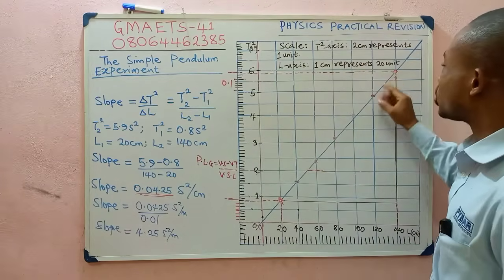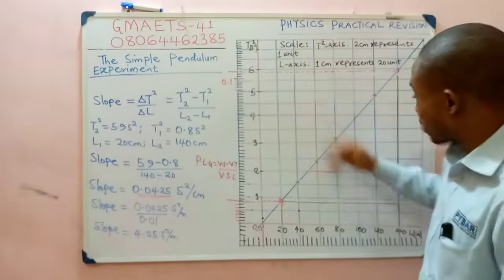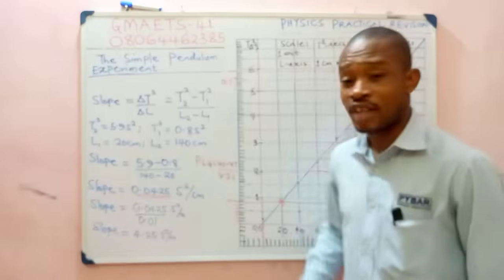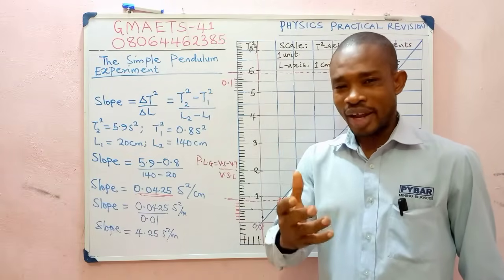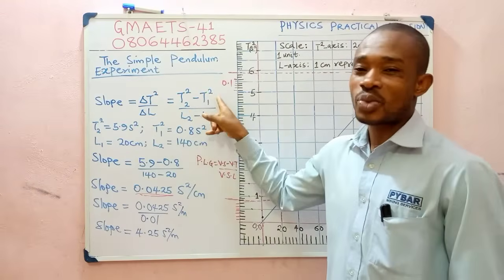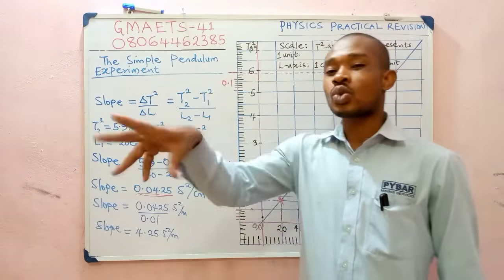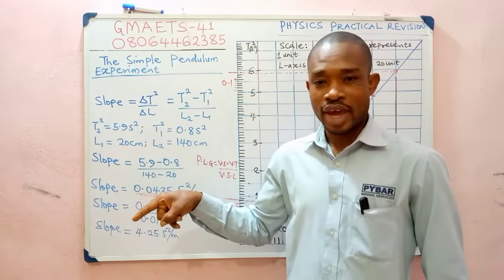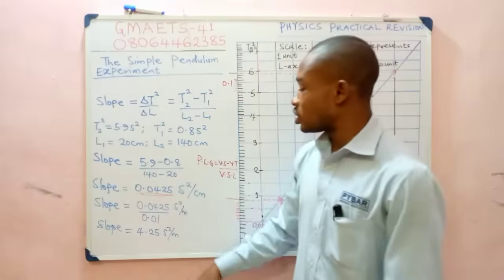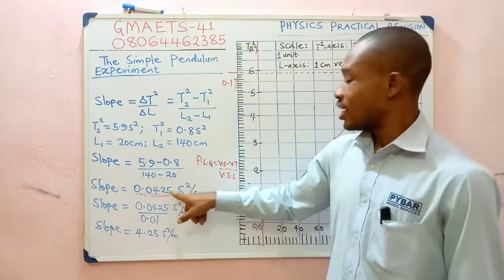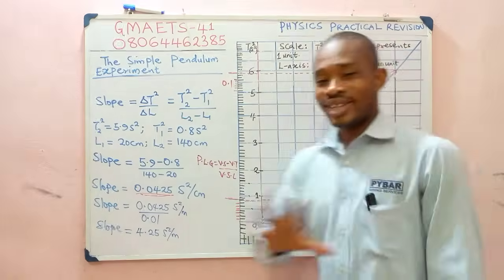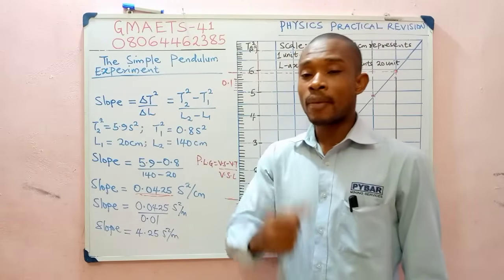When calculating slope, do not use generic y2 minus y1 over x2 minus x1 — the question didn't ask you to plot y against x. Use the actual quantities: (t2² − t1²) / (L2 − L1) = (5.9 − 0.8) / (140 − 20). Punching that into your calculator gives 0.0425 s² per centimeter, since the length values are in centimeters.